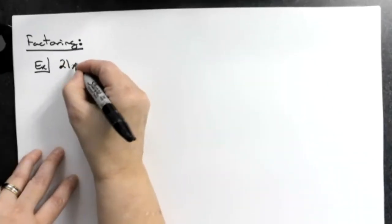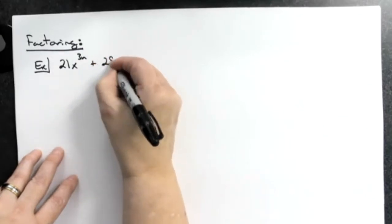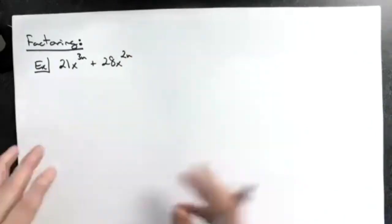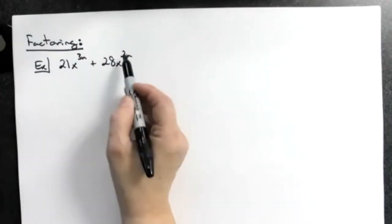Like 21x to the 3n plus 28x to the 2n. Now there's going to be a variety of regular factoring type problems with numbers and that sort of thing. However, there will also be at least one on there that deals with these exponents.